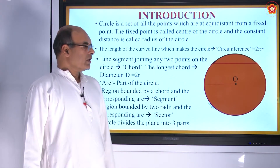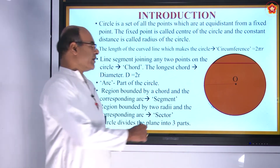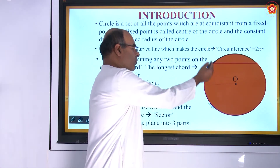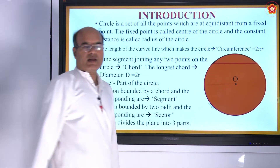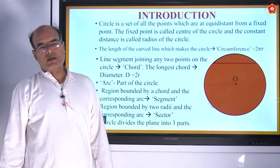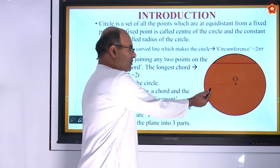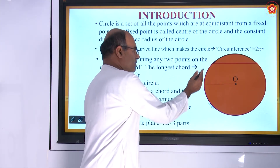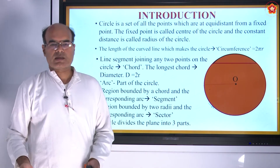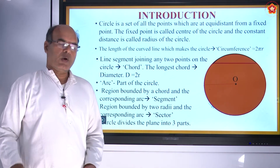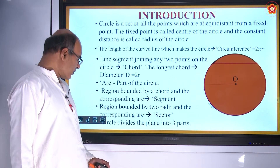A circle divides the plane into three parts: the circle itself, the interior region inside the circle, and the outer region which is the part of the plane outside the circle.